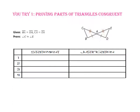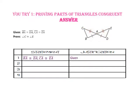Pause the video and do you-try number 1. We want to prove that angle C is congruent to angle E. Let's start with the given information that side BA is congruent to side DA and side CA is congruent to side EA.